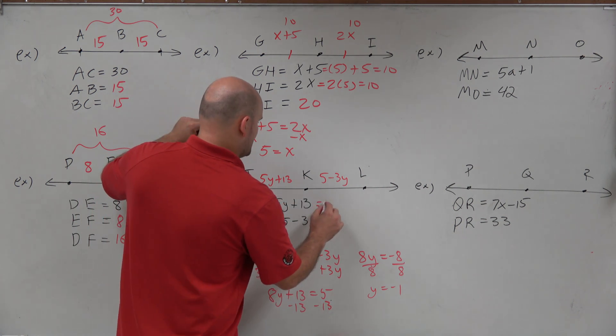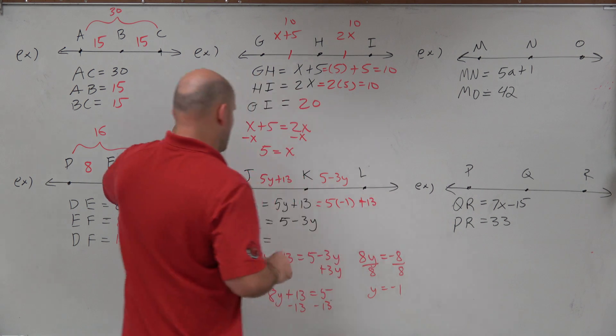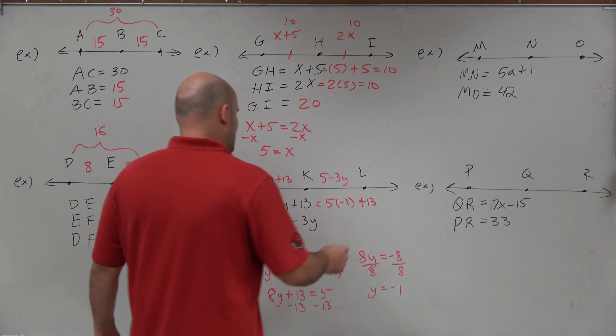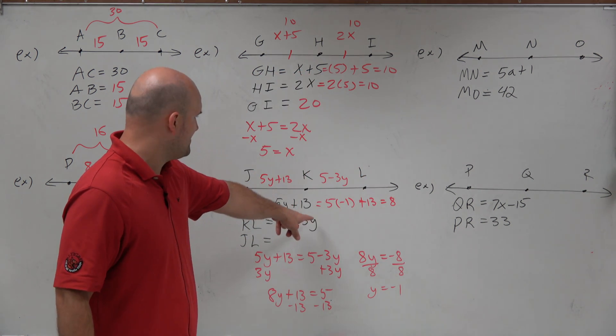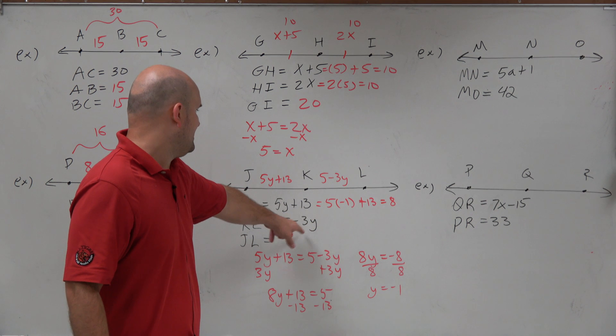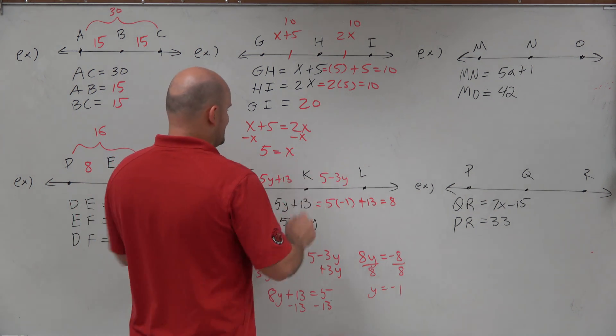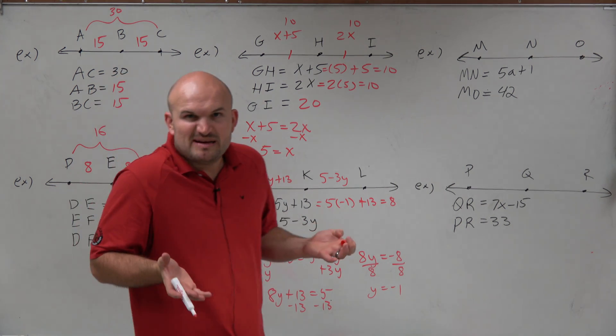Now we can just go and plug this in there. So I can do 5 times negative 1 plus 13. And we can see that that's going to be negative 5. So that's going to equal, again, 8. And let's just double check to make sure. If I plugged in a negative 1 for y, that'd be a positive 3. So plus 5, 8, that would equal 8. So therefore, if that's 8 and that's 8, that means my length from J to L is going to be 16. Basically going to be the double.